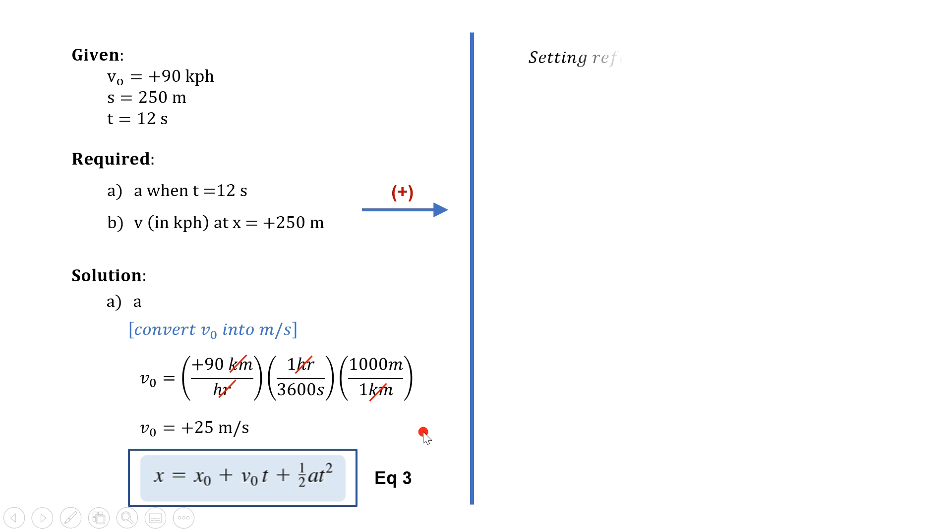Take note that we placed the reference at the initial position, which means x₀ equals 0. Substituting the required values in the third kinematic equation, we have positive 250 equals 0 plus 25 times 12 plus one-half times acceleration times 12 squared. From this, we obtained that acceleration equals negative 0.6944 meters per second squared, and the negative sign indicates that the acceleration is directed opposite of the direction of motion. In other words, the motorist is decelerating.